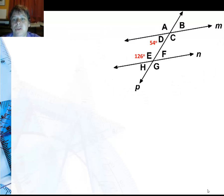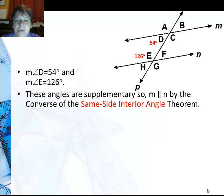Here I'm showing two same-side interior angles, angle D and angle E. One is 54 and one is 126. These angles are supplementary, which means that line M is parallel to line N by the converse of the same-side interior angle theorem. They're both in between the parallel lines so they're inside, and they're on the same side of the transversal.